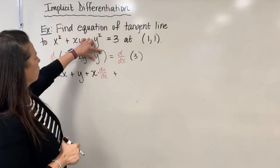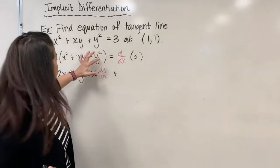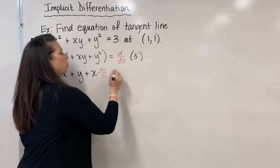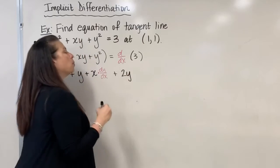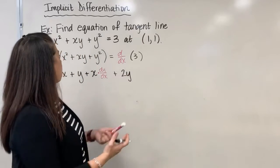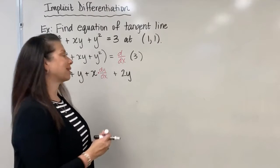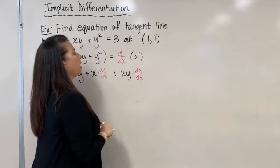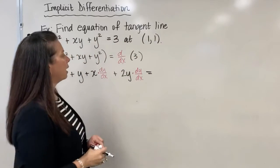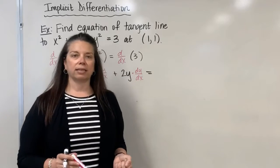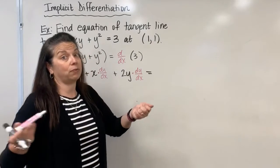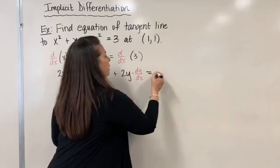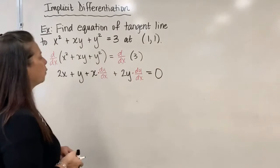I also need to find the derivative of y squared. That's just a y term, but I'm finding the derivative with respect to x. So I find the derivative like normal: this will be 2y. Because I was finding the derivative of y with respect to x, I need to multiply by dy/dx. On the right-hand side, the derivative of the constant 3 is just 0.